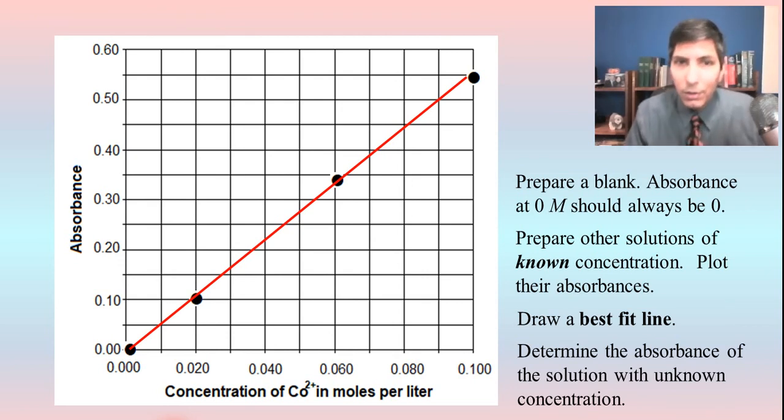So, for example, if we have an unknown concentration of cobalt-2 ion, and we plug it into the little slot there, and it shows an absorbance of, let's say it's about right here, about 0.27, somewhere in there. Well, we just take that over to the line, and we can see, as we drag that down, it looks like the concentration right there is going to be 0.05 moles per liter, or somewhere very close to that.